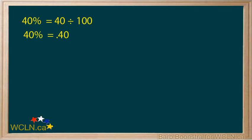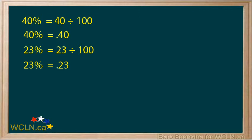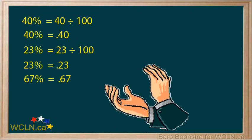Now it's your turn. Think what 67% is as a decimal. You are right — it is .67.